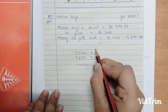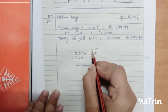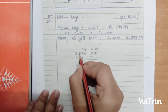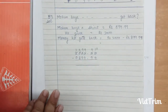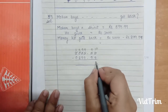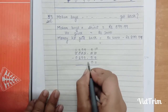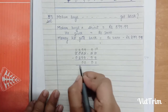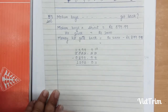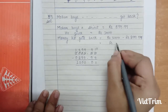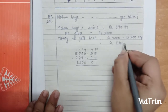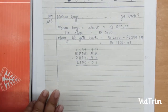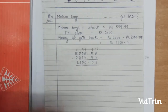Now we take borrows. So it becomes 10, 9, 9. The 0 becomes 9, 9, and 2 becomes 1. Now we do the subtraction: 10 minus 9 is 1, 9 minus 9 is 0, decimal under decimal, 9 minus 9 is 0, 9 minus 9 is 0, 9 minus 8 is 1, and 1 minus 0 is 1. So the answer is rupees 1100.01. The money Mohan gets back is rupees 1100.01.